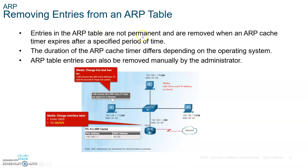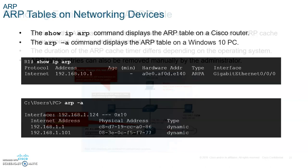Now let's talk about removing entries from the ARP cache. When you get the MAC address from the destination, you put it in your memory cache. Instead of keep sending ARP requests, since you already know it, you just grab it from cache and send it out. But if you don't communicate with that host — like host 4 — for a certain amount of time, the MAC address in the cache will be removed. It takes about five to ten minutes.